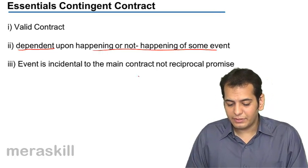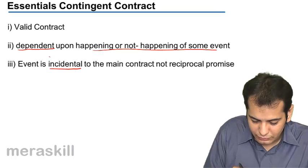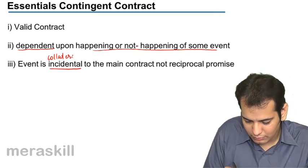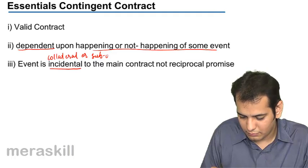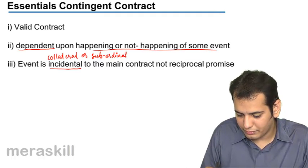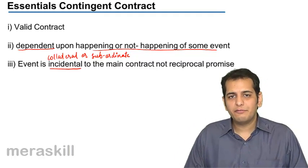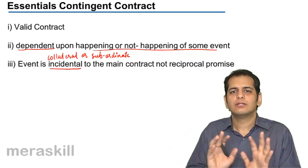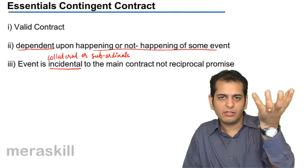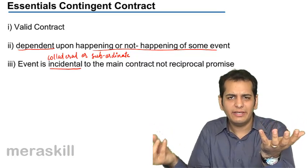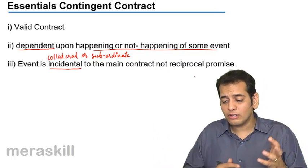The event is incidental to the main contract, not a reciprocal promise. Incidental means it is collateral, subordinate, or secondary. So the event is secondary — it is collateral, not primary, it is subsidiary. There is a main contract and there is an event which is collateral, incidental, subsidiary, and secondary to the main contract, and not a reciprocal promise.